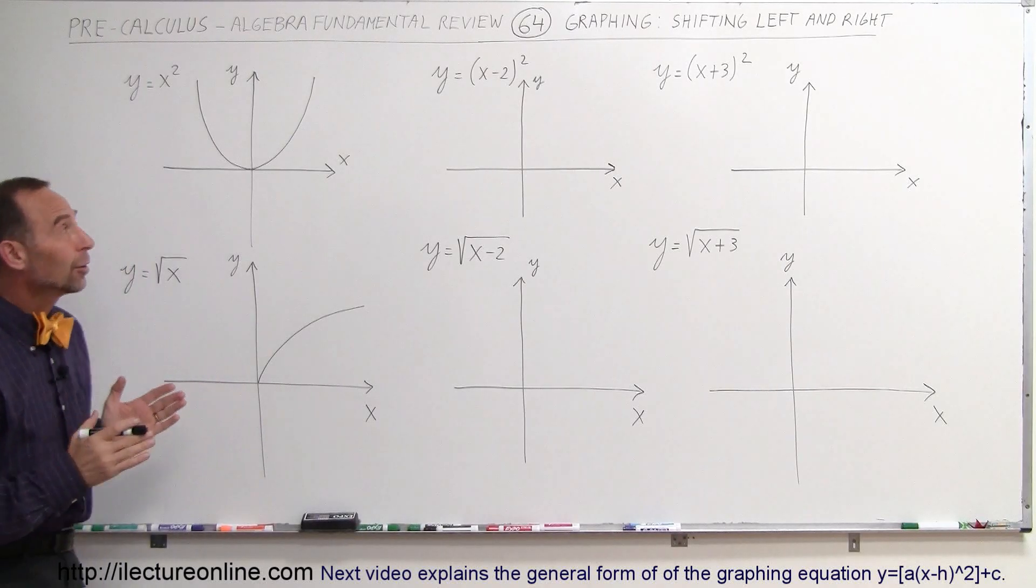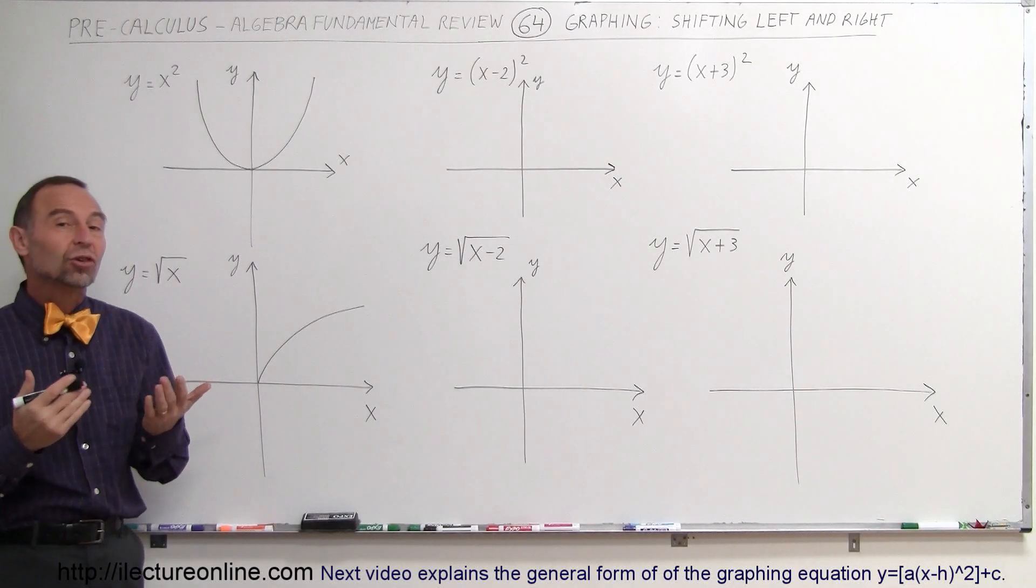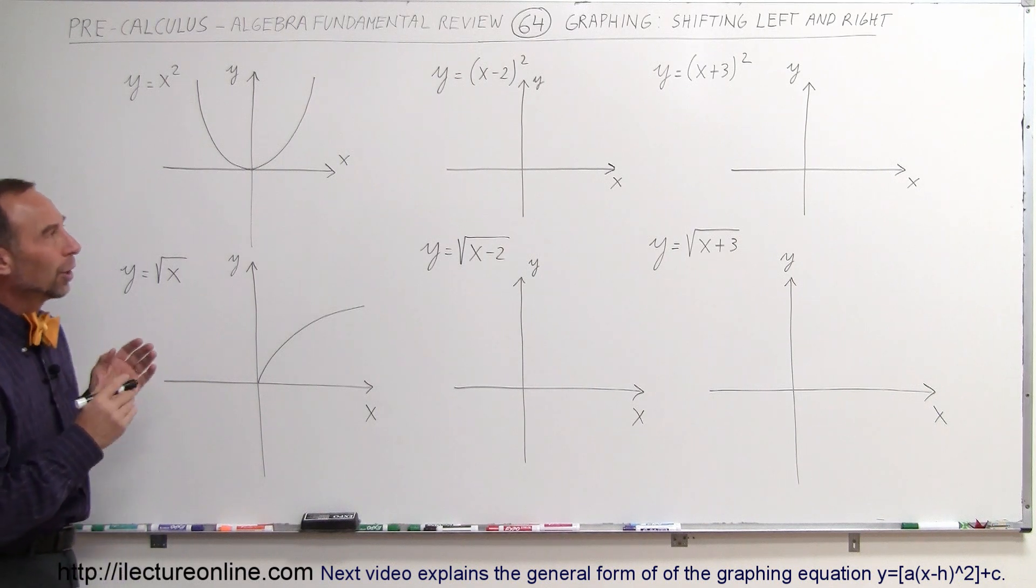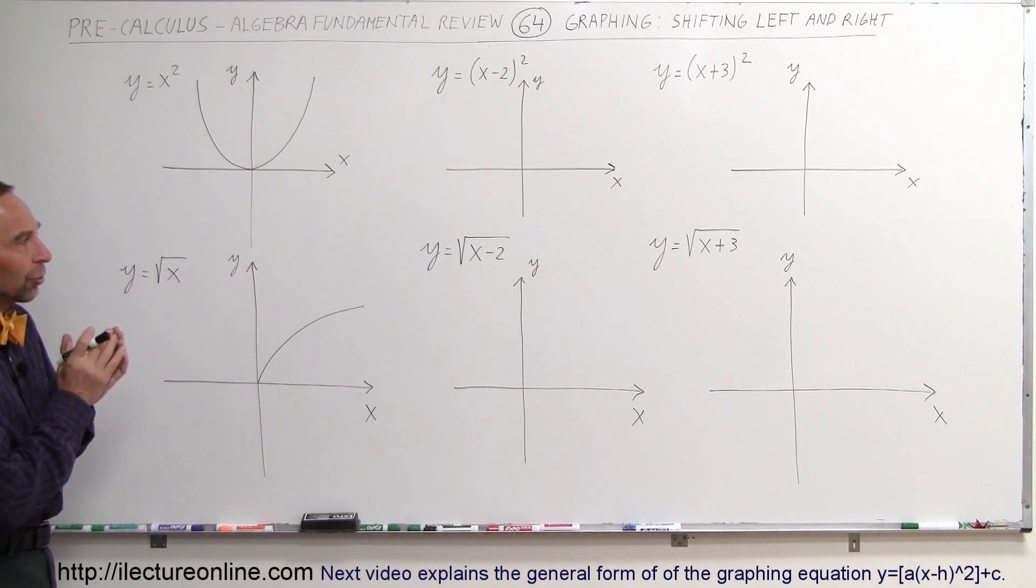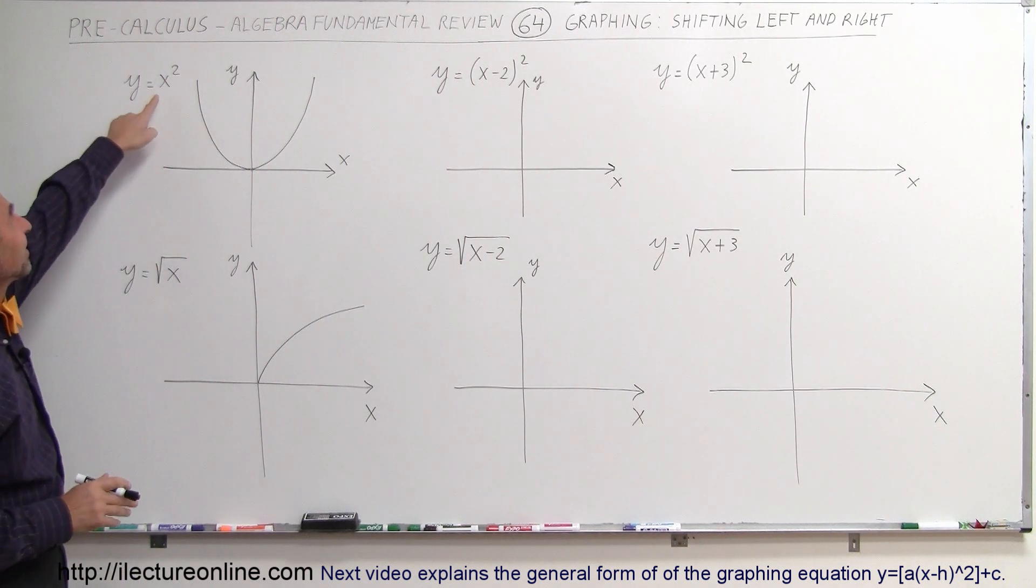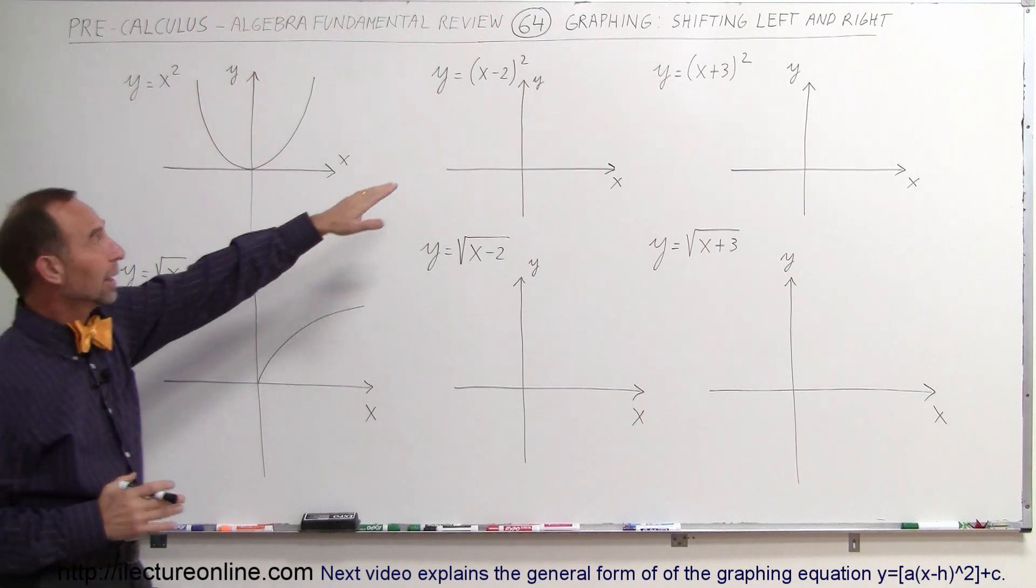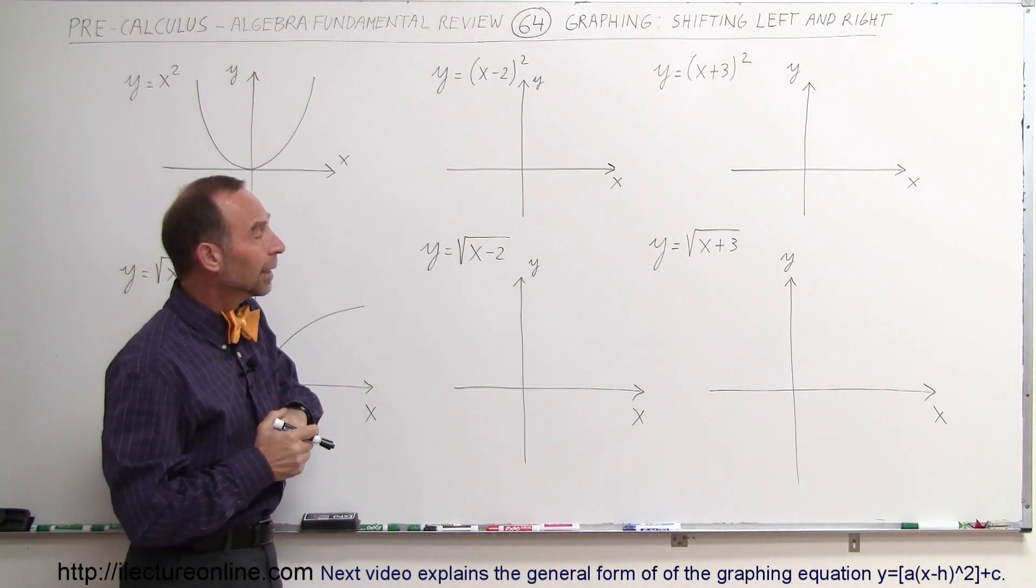Welcome to Lecture Online and now we're going to take a look and see how the graph changes from left to right. In other words, it's shifted to the left or the right when there's something inside the quantity that's squared, like in the case of a second order equation, a parabola.